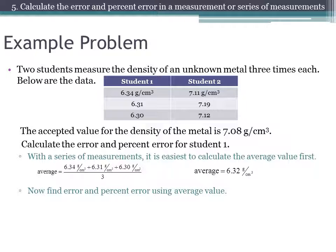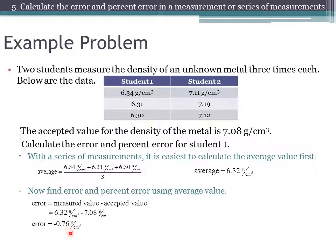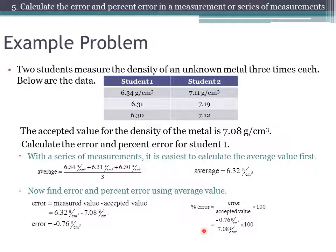Now we can find the error and percent error using that average. The error is the average measured value of 6.32 grams per centimeter cubed minus the accepted value of 7.08 grams per centimeter cubed, giving us negative 0.76 grams per centimeter cubed — negative because the measured values were too low. For percent error, we take negative 0.76 divided by 7.08 and multiply by 100, giving us negative 11%.